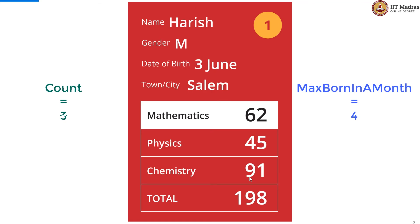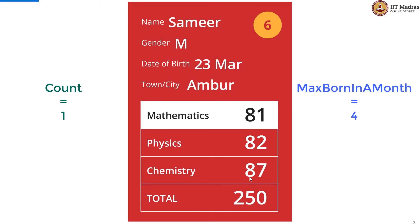count is re-initialized to 0 and incremented by 1 for the month of June — only 1 June card. count is re-initialized to 0 and incremented to 1 for the month of March. There is no update in max because 4 is greater than 1.